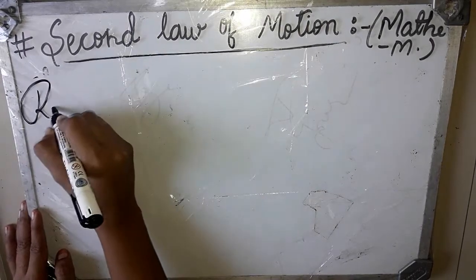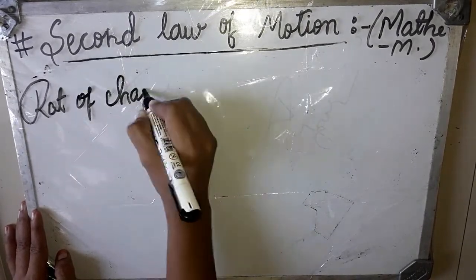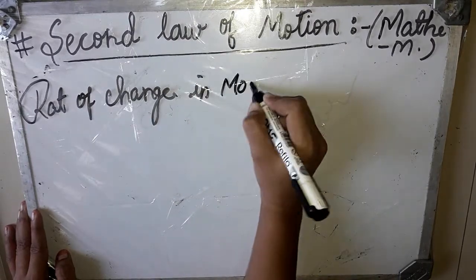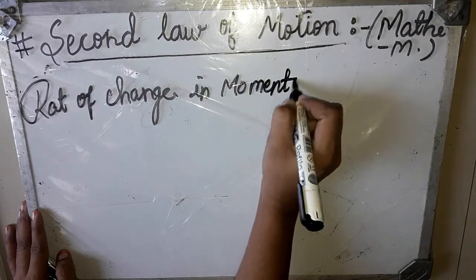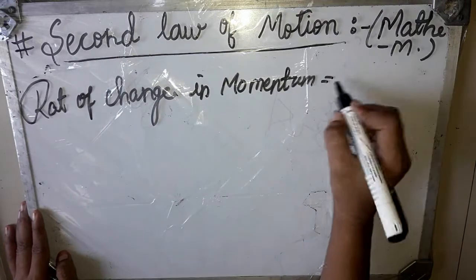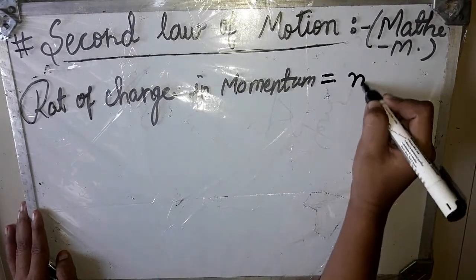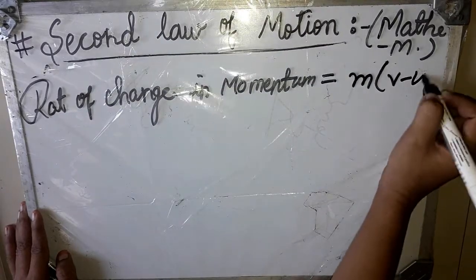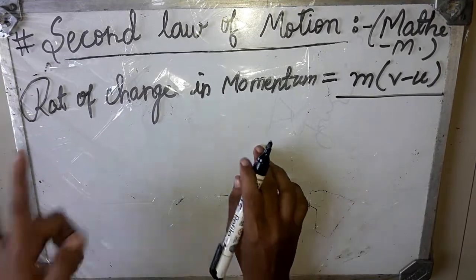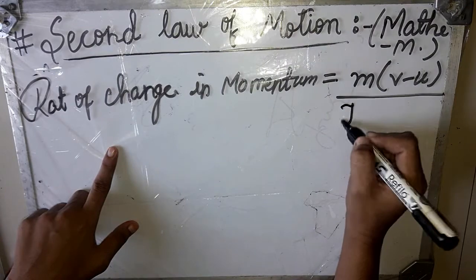What is the formula for rate of change of momentum? The change that occurred in momentum was m(v minus u). Upon — that is, divided by — time taken. In the second law, dp upon dt means change in momentum divided by time taken t.